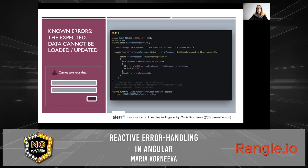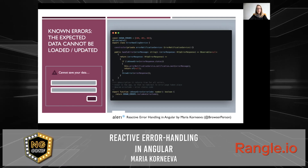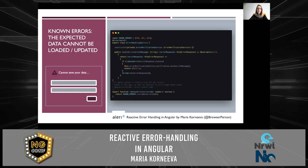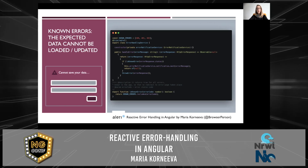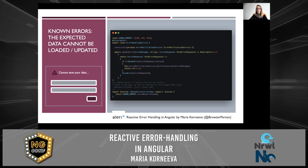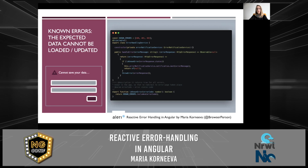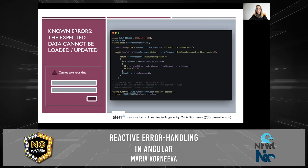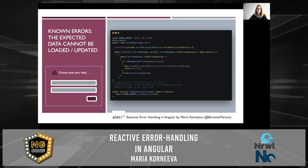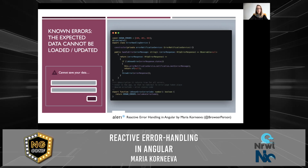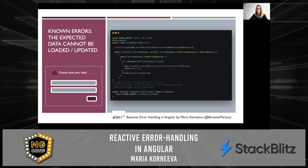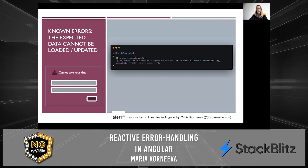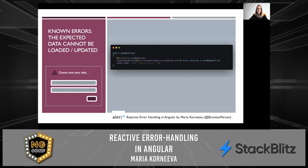So we can do better than this. Let's introduce an error handling service. In the handleError method, you can provide additional functionality. In my case, I want to handle known errors differently — my known errors are 400, 401, and 403. In this case, I want to display a specific error message in my error component. And if something unexpected happens, I want to implement a different behavior — for example, a redirect to an error page. But you can have tracking, logging, whatever you want in here. You just call handleError and pass the specific error message, and the rest is handled by the error handling service.